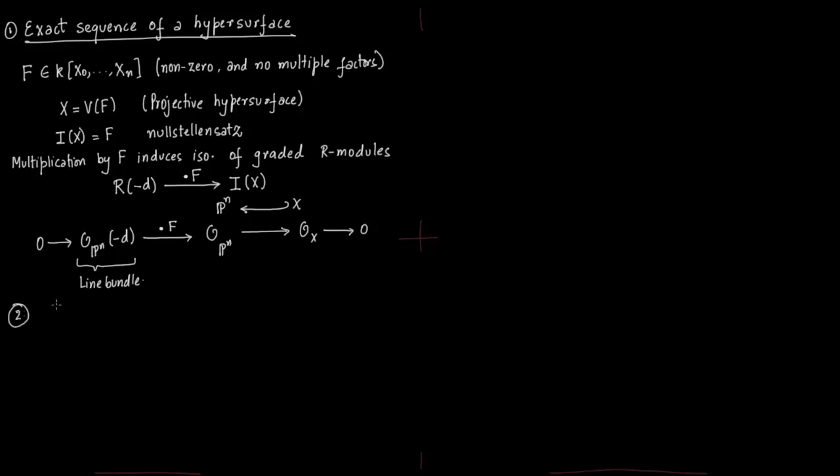The second sequence is exact sequence of a complete intersection. Now we will have two polynomials, again homogeneous. We are working in projective space so we will work with graded rings and these two polynomials will have no factors in common. You have polynomial f of degree s and you have polynomial g of degree t, and f and g have no common factors. First you set out the ideal.